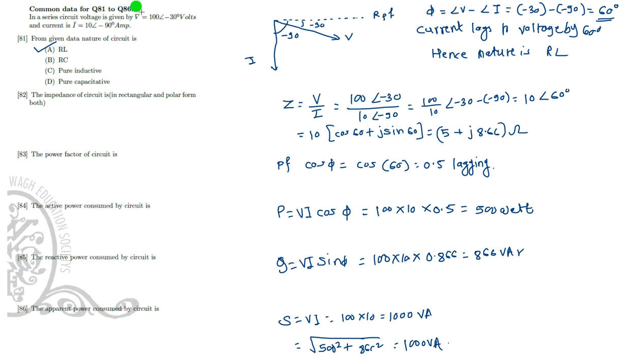The common data for questions 81 to 86: the voltage is given as 100∠−30° and the current is given as 10∠−90°. So what is the nature of the circuit?